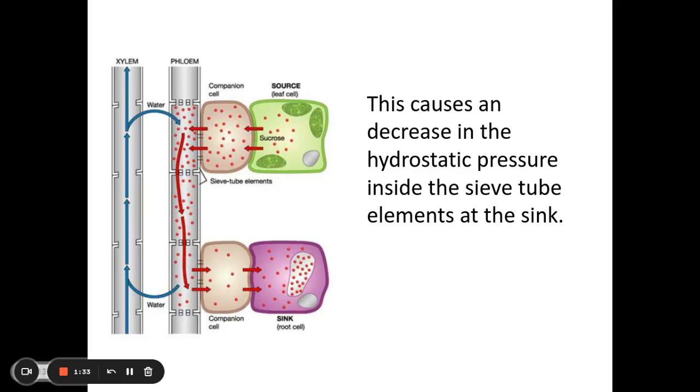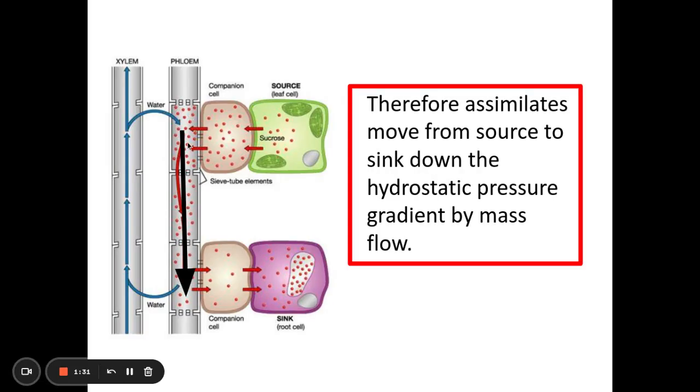So because I have a high hydrostatic pressure here at the source and a low hydrostatic pressure here at the sink, due to this movement of the sucrose and then therefore the water, assimilates will move from the source to the sink down the hydrostatic pressure gradient by mass flow.